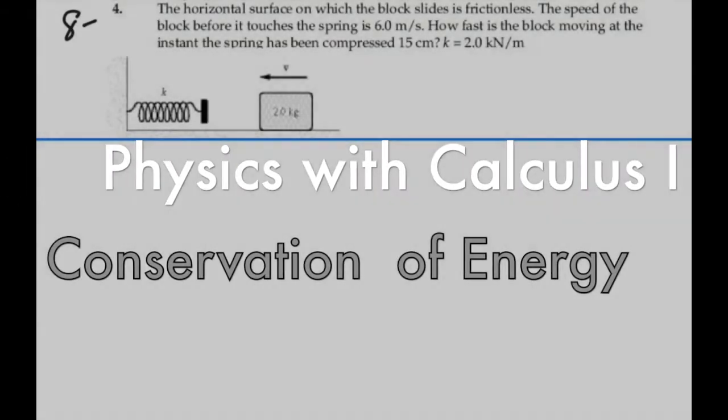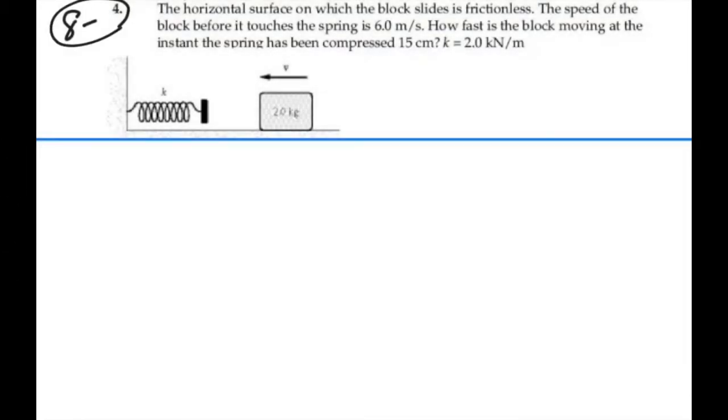Here's problem 8.4. The horizontal surface on which the block slides is frictionless. The speed of the block before it touches the spring is 6 meters per second. How fast is the block moving at the instant the spring has been compressed 15 centimeters? Our k constant is 2 kilonewtons per meter.